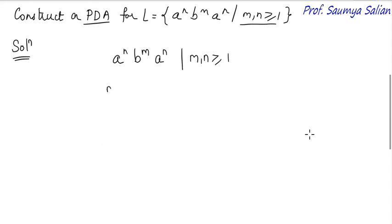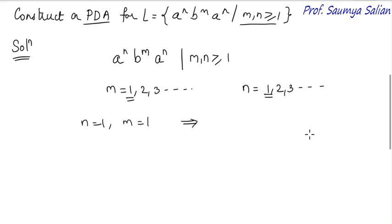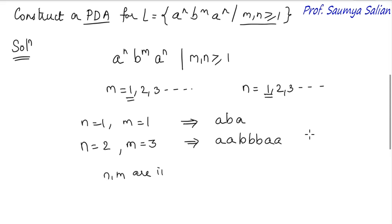So here m can be 1, 2, 3 and so on, and n can also be 1, 2, 3 and so on. The minimum value for m is 1 and minimum value of n is also 1. So if n equals 1 and m equals 1, the string would be A, B, A. When n equals 2 and m equals 3, the string would be A, A, B, B, B, A, A. So n and m are independent, and the minimum value for n and m is 1.